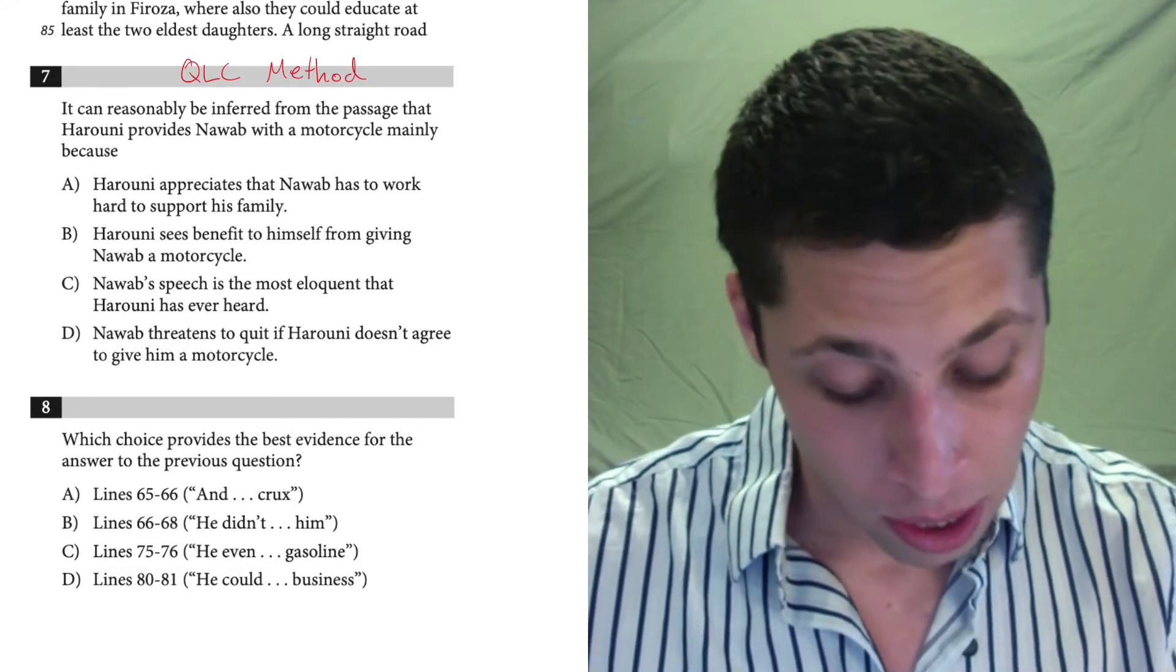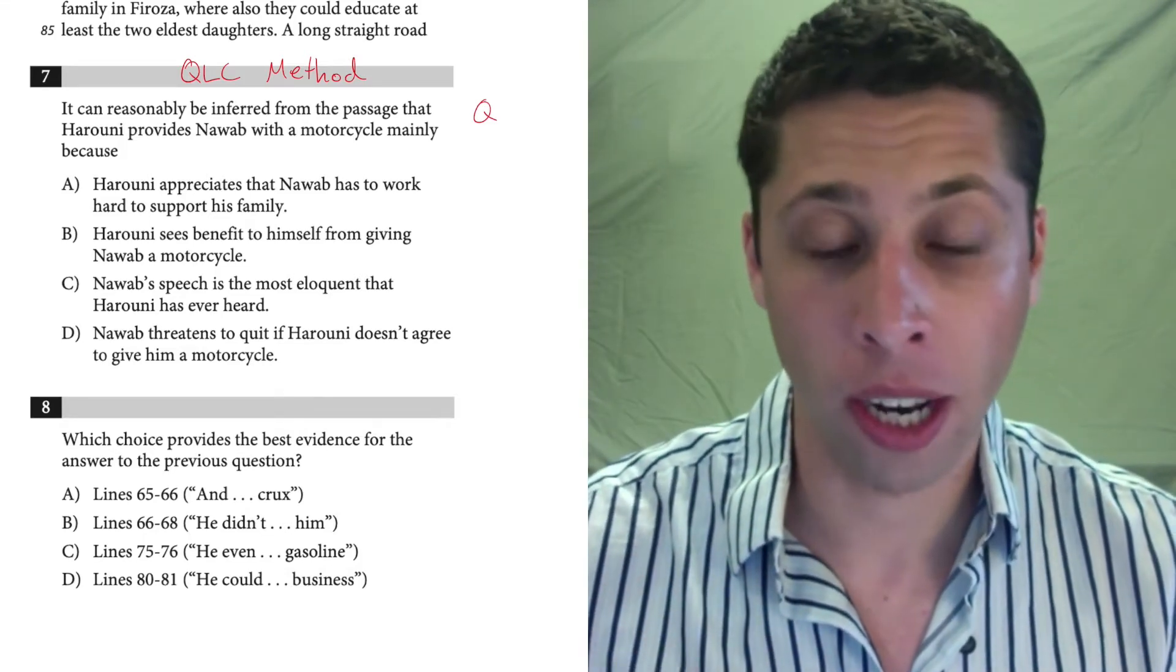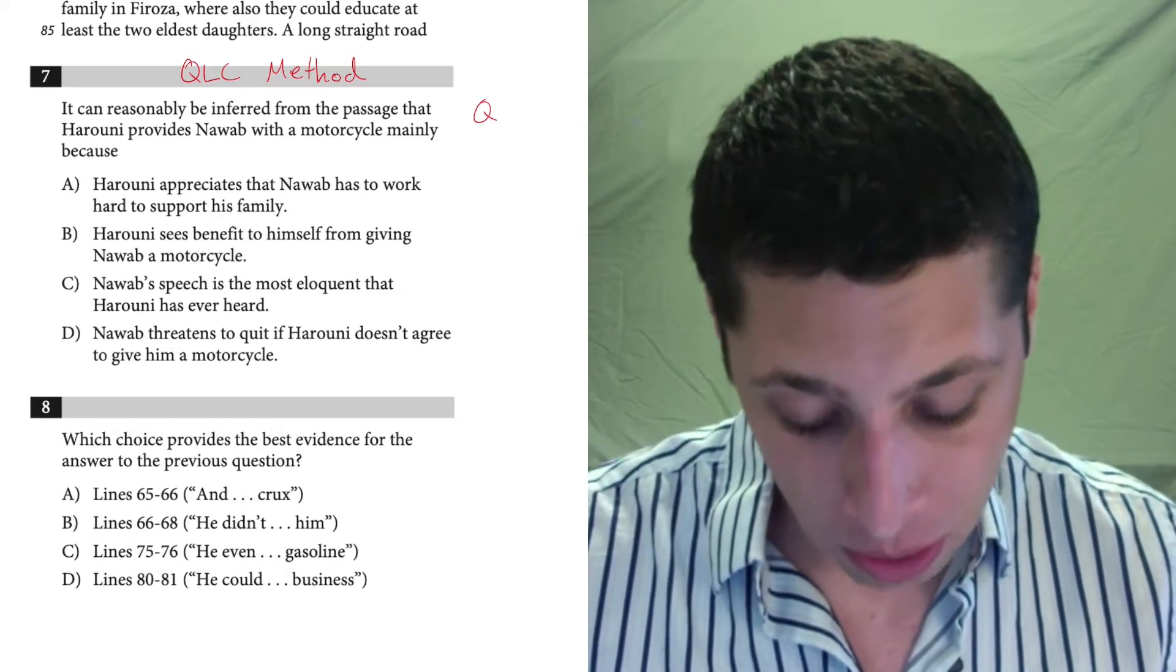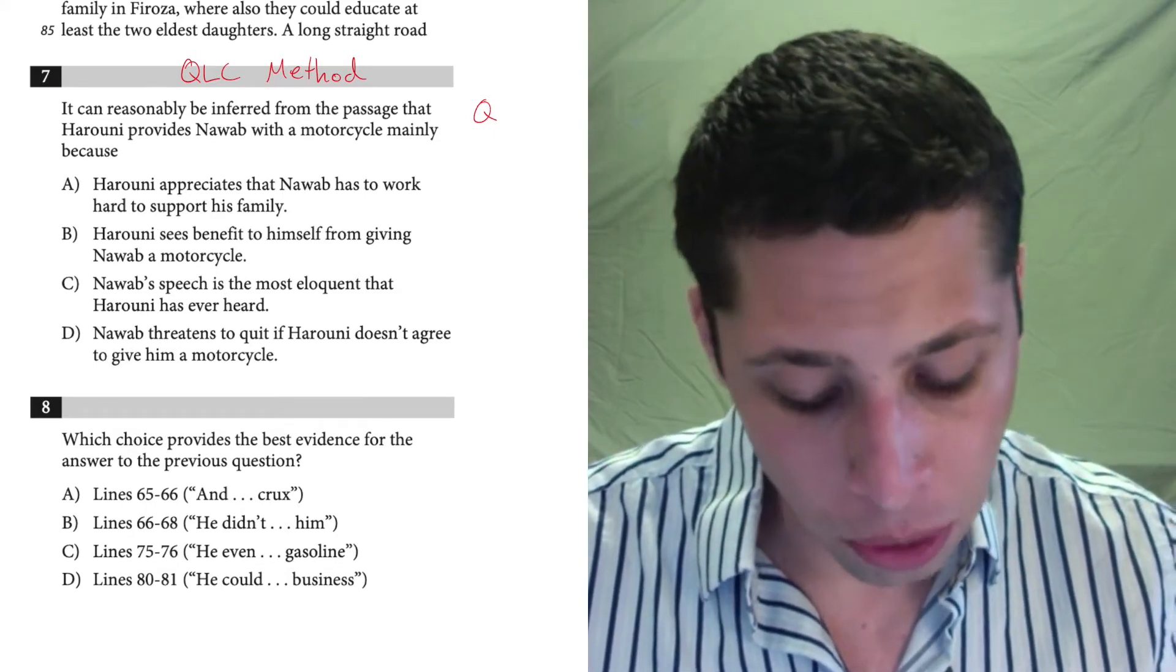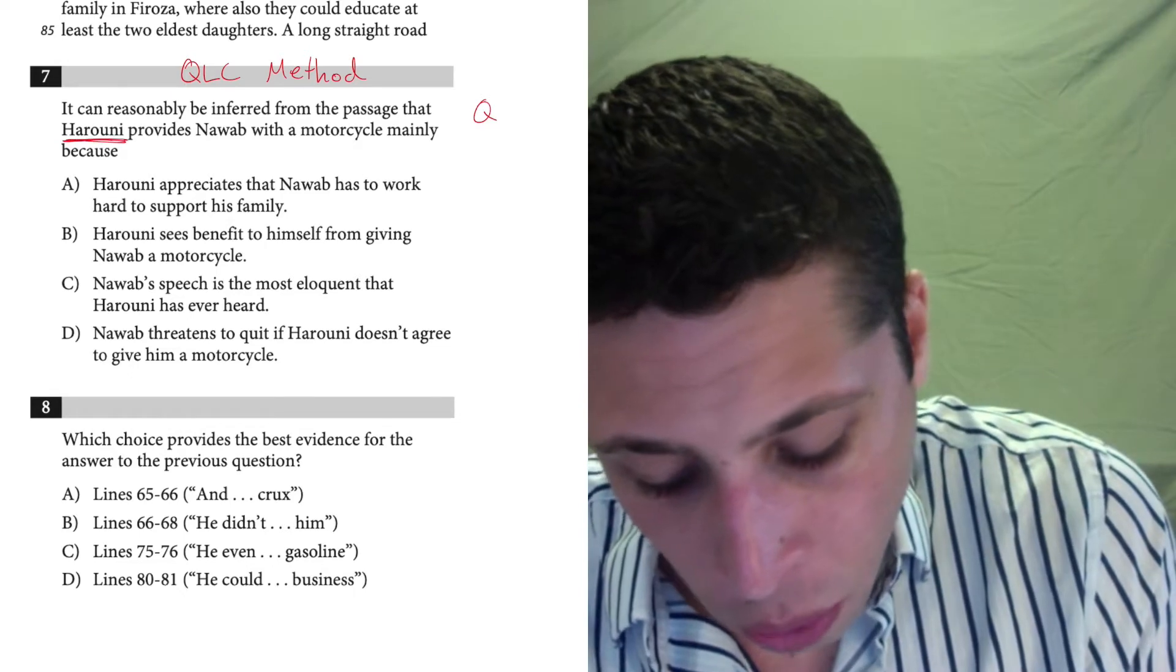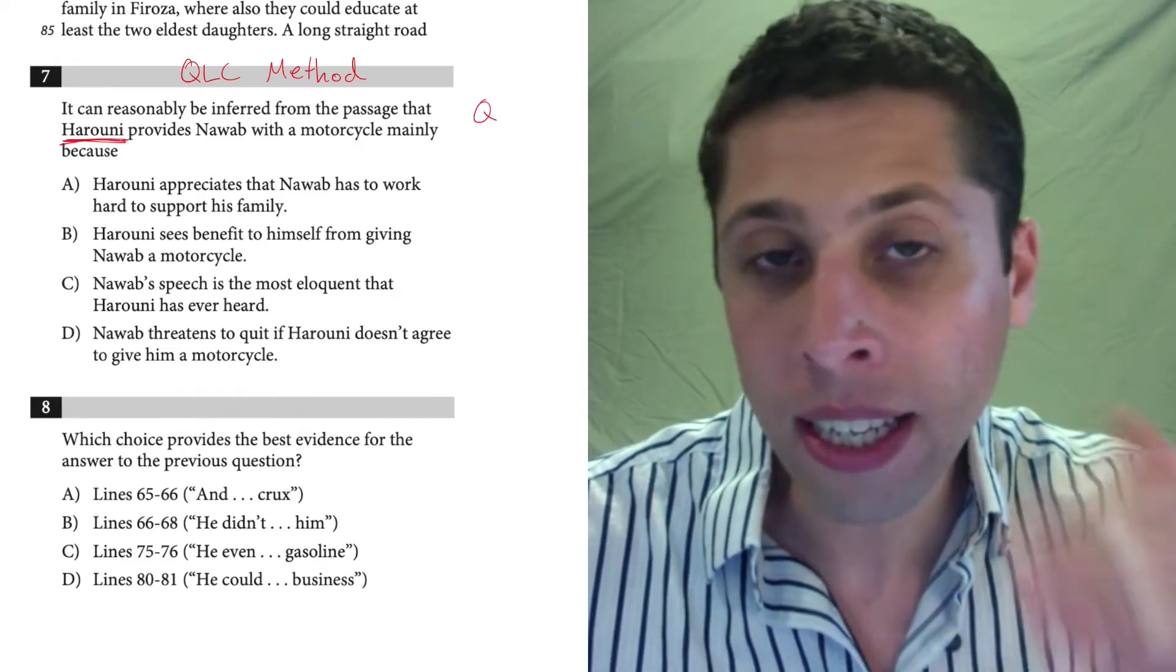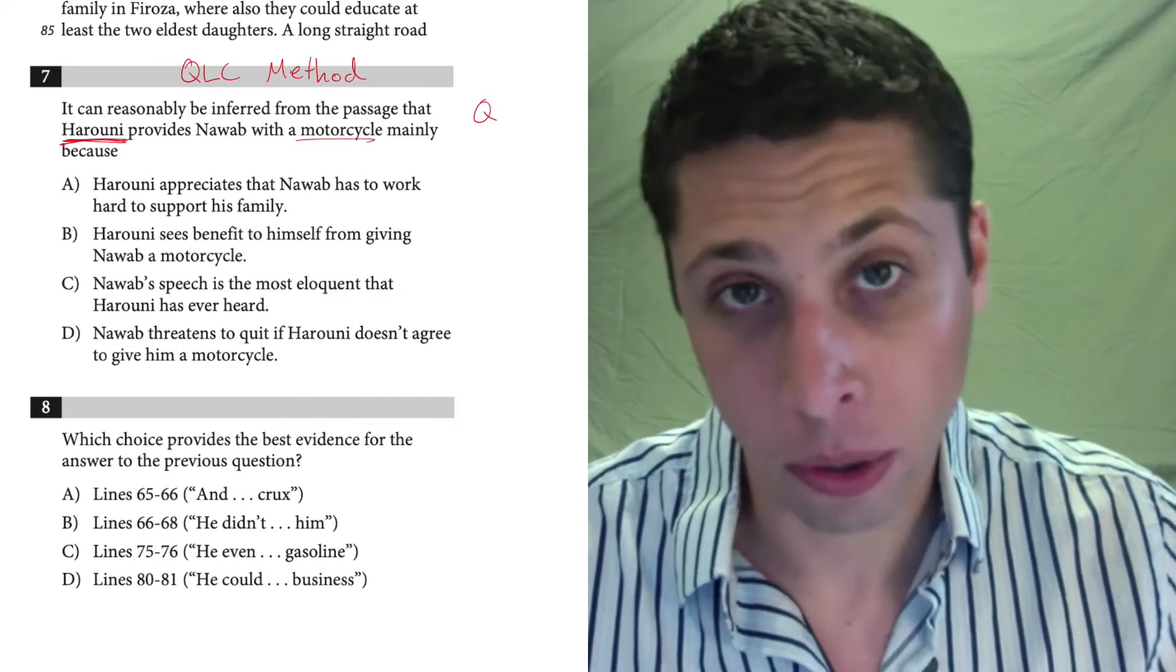So the first thing I do is I read the question and try to understand if there's anything in particular that I need to focus on as I read the line references. So in this case, it can reasonably be inferred from the passage that Haruni provides Nawab with a motorcycle mainly because. Okay, so the focus of this question is on Haruni. Why does he give the motorcycle?